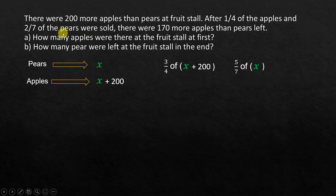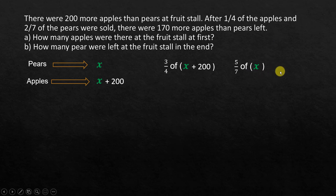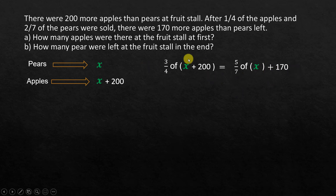Now when these were sold, the apples left are three-fourths of x plus 200, and the pears left are five-sevenths of x. There were 170 more apples than pears left, so if we add 170 to the pears side, we can equate the two expressions. So three-fourths of x plus 200 equals five-sevenths of x plus 170. That gives us an equation we can solve to find x.